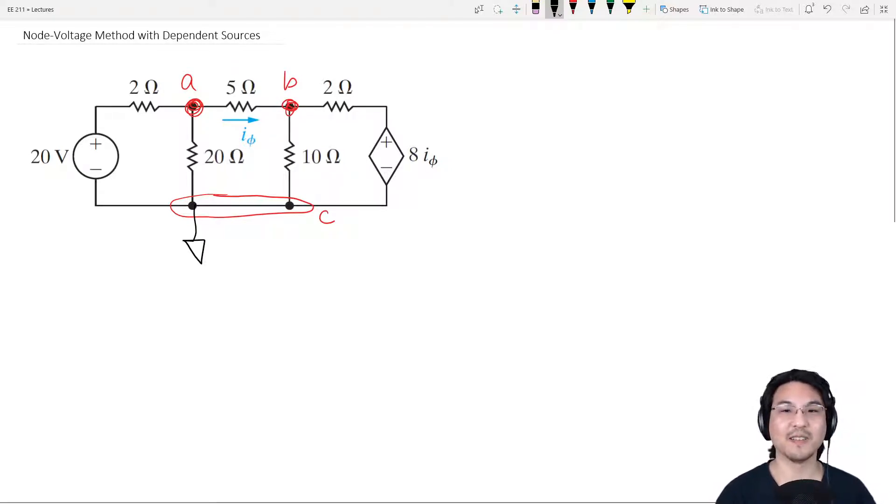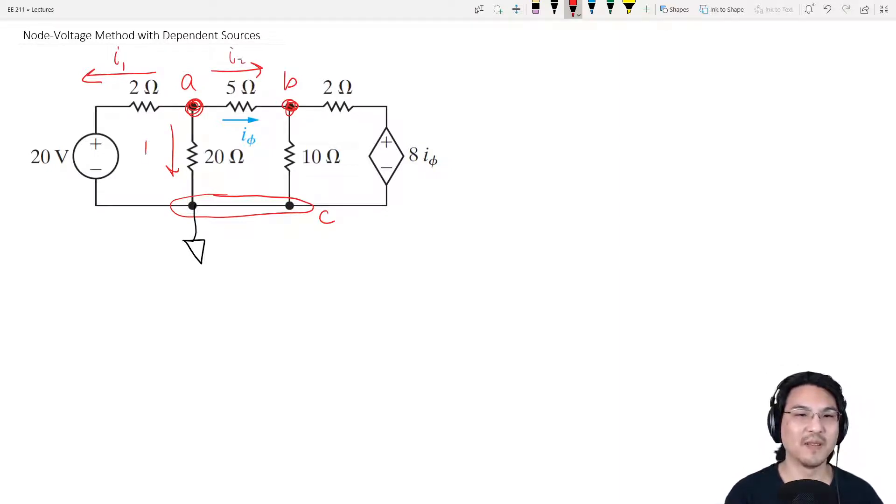Now let's write KCL for node A, and I'll write with positive going out. I'll call this I1, I2, I3 for when I write it. So KCL at node A: I1 plus I2 plus I3 equals zero.